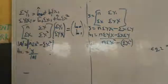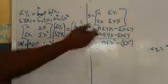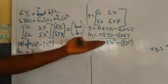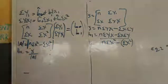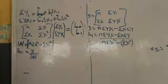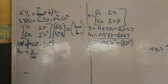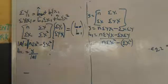That is our b1 for the normal equation. We've gotten our b0 and b1 — these are the least-square estimates derived from the normal equation. In our next video, we are going to input values. Please subscribe to get more from our videos. Thank you.